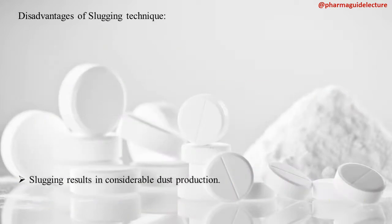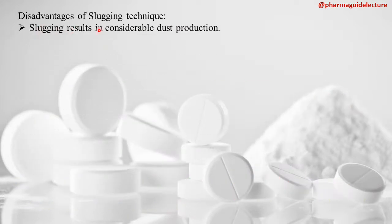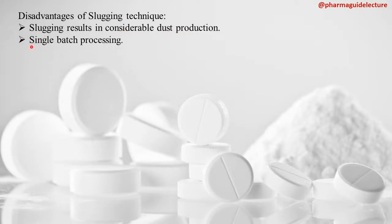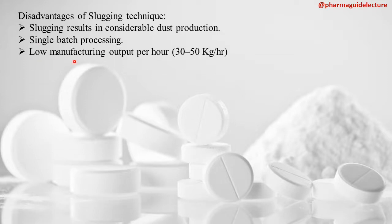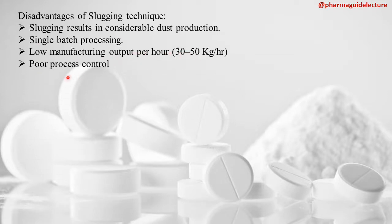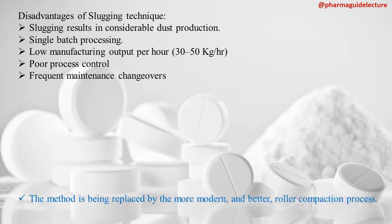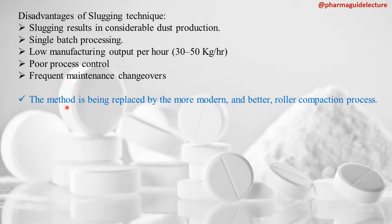Disadvantages of the slugging technique include considerable dust production, single batch processing with low manufacturing output of about 30–50 kg per hour, poor process control, and frequent maintenance changeovers. This slugging technique is being replaced with the more modern roller compaction process.